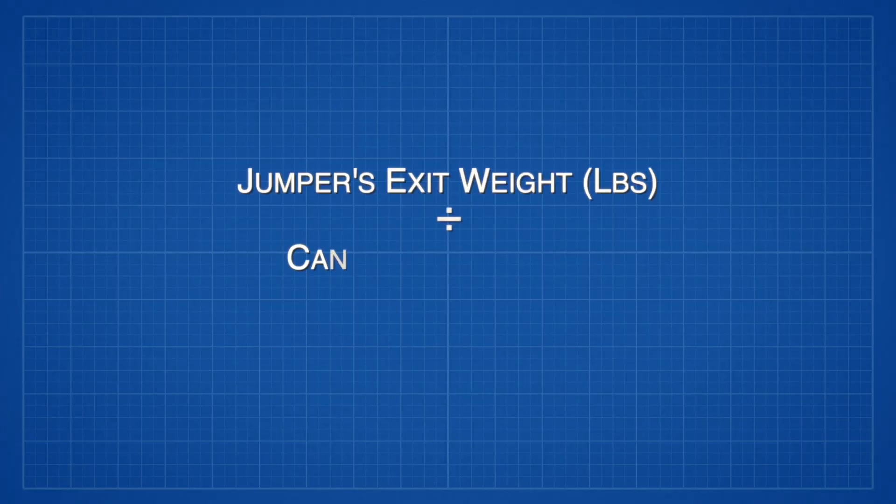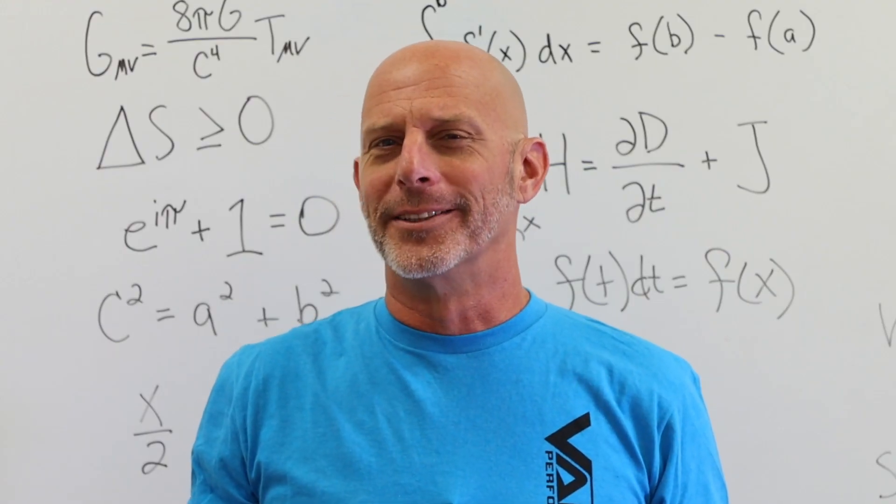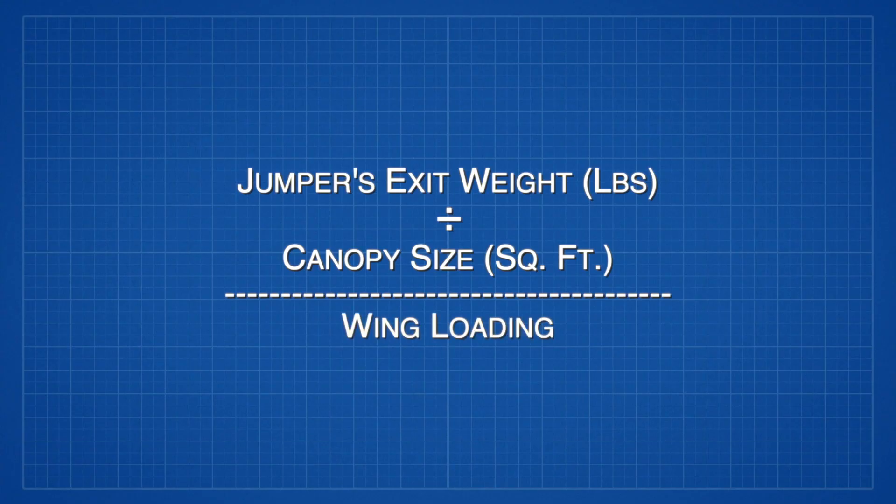Now that you know your exit weight, you're going to divide it by the square footage of the canopy that you're jumping or planning to jump. Yes, you can use a calculator. And voila, you have your wing loading.